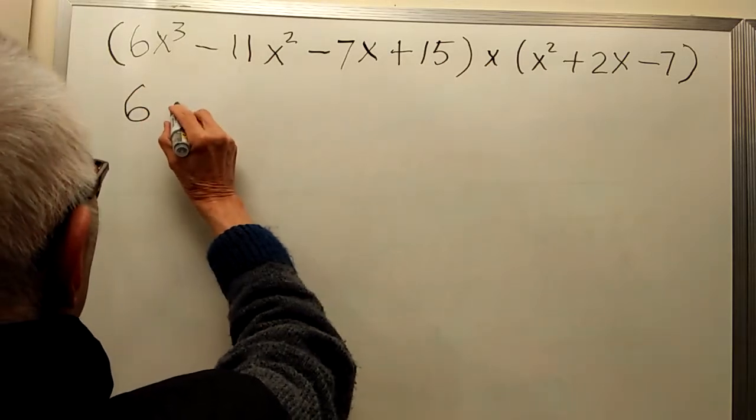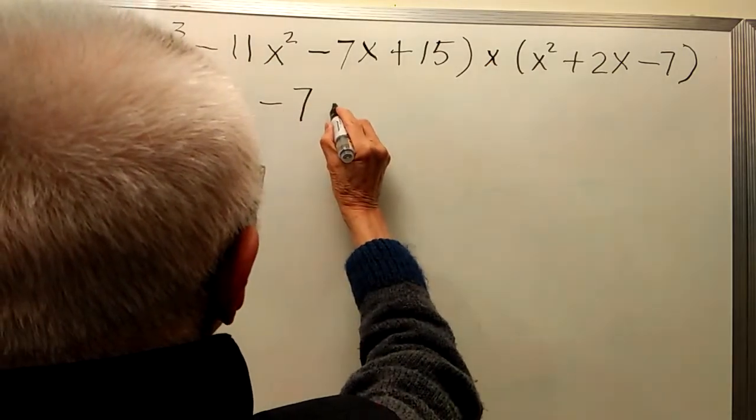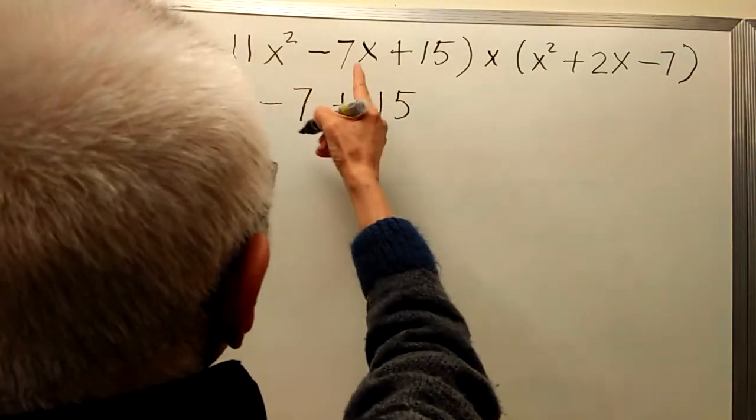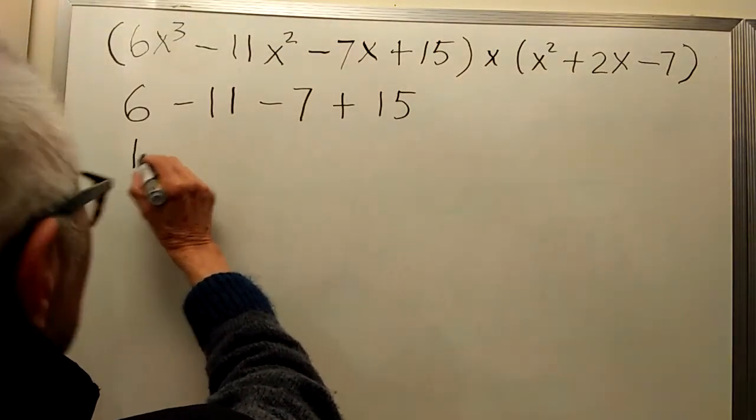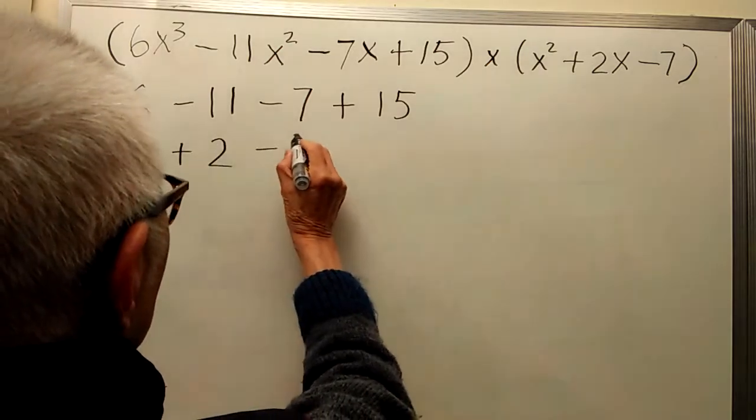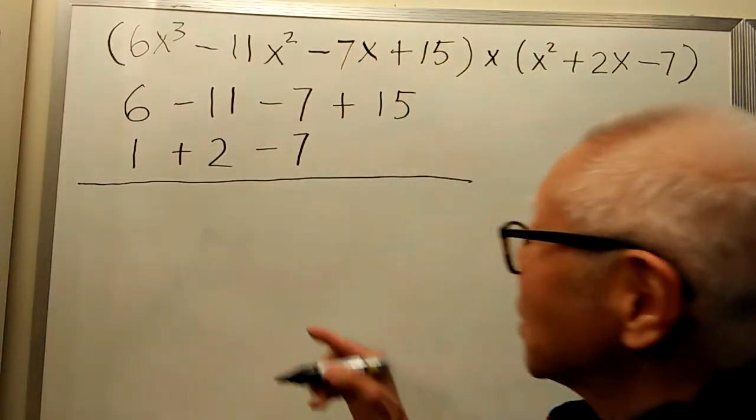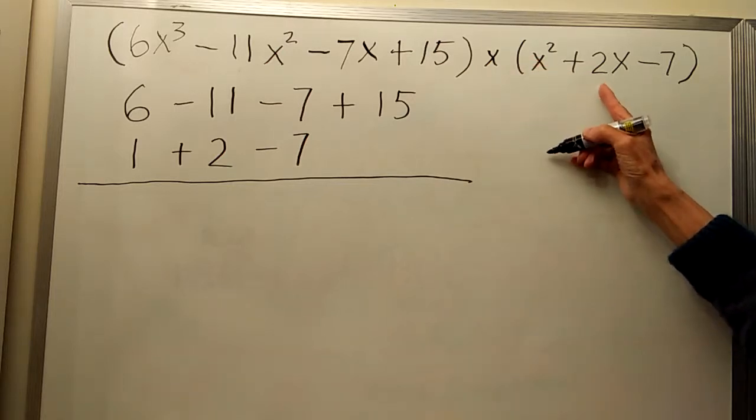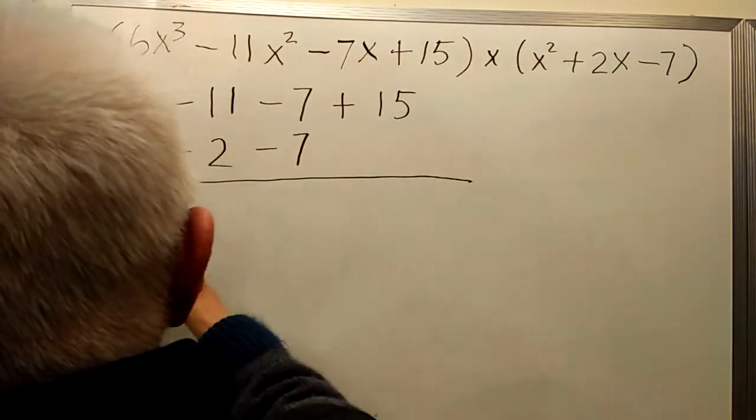6, minus 11, minus 7, plus 15. The second polynomial I only write 1, 2, and minus 7. Let us multiply: 1 times 6 is 6.